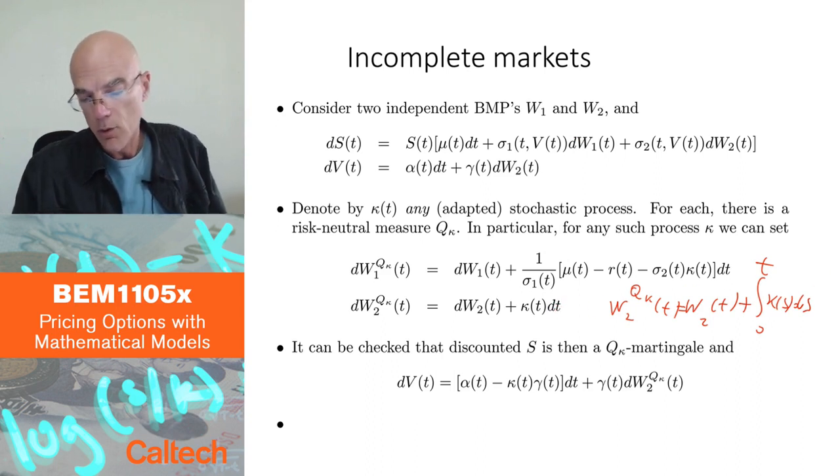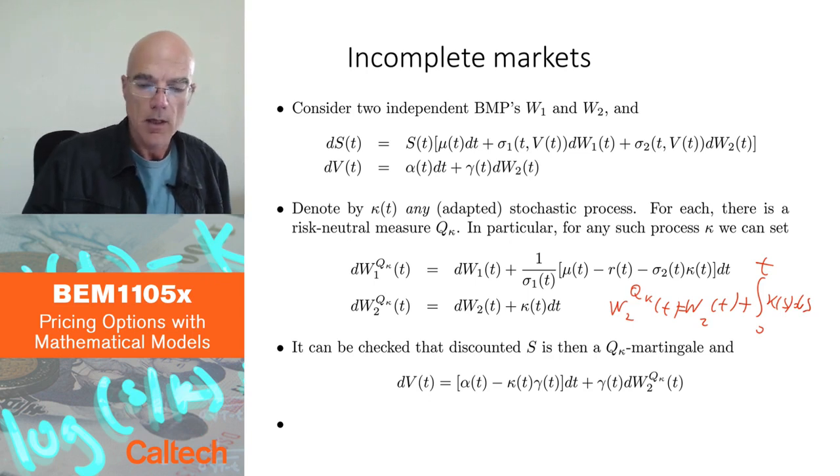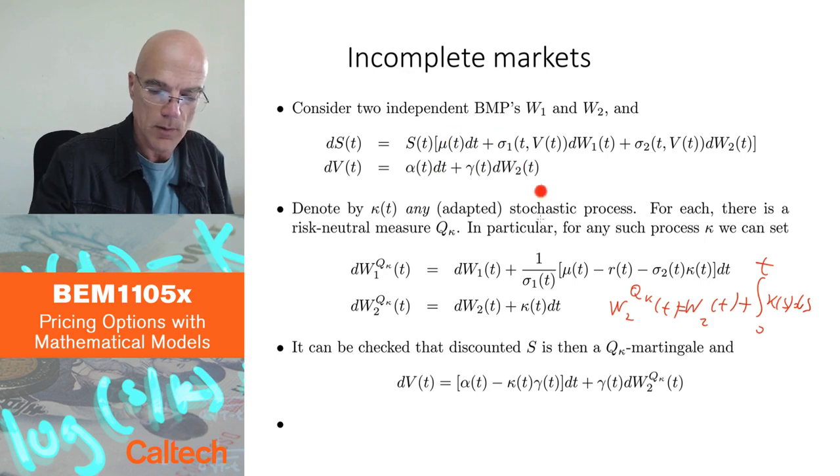Then you have many ways to do that. And as I told you already in practice, you then just, you make assumptions. In particular, you make assumptions typically, like in Heston's model, that this alpha and gamma and mu sigma_1 or kappa if you want.